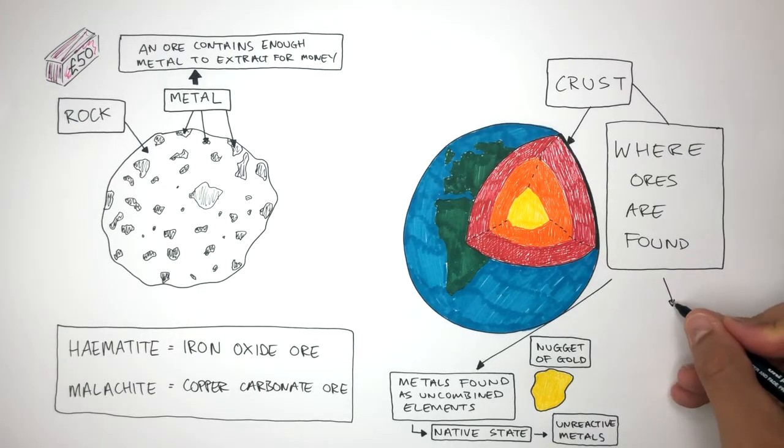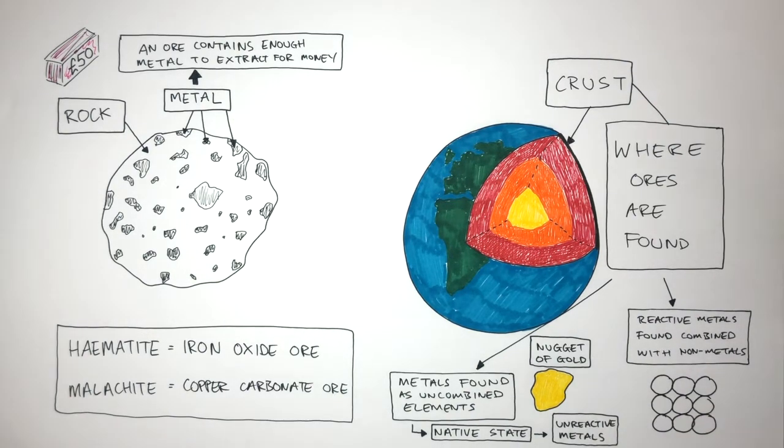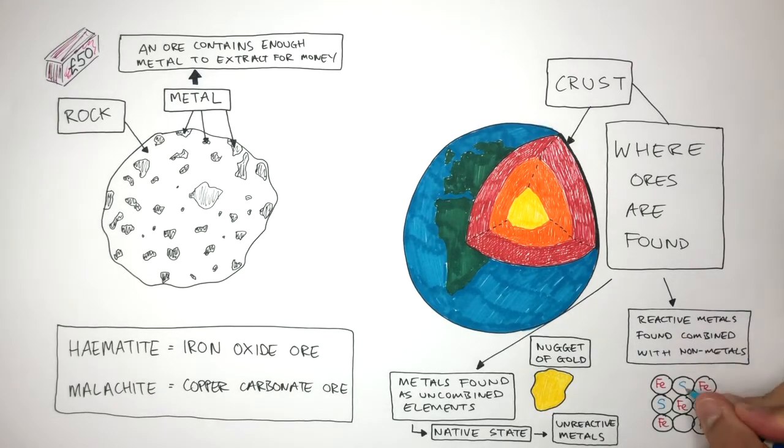Ores can also contain reactive metals found combined with non-metals. So for example, this particle diagram represents iron chemically combined with sulphur, forming an iron sulphide compound. So if we wanted the iron, we'd have to extract it from its compound using chemical reactions.